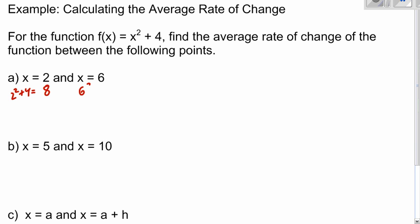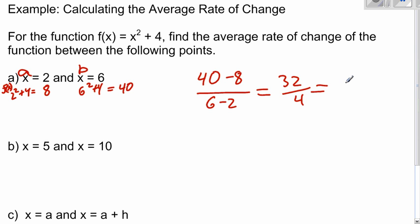Plug in 6, 6 squared plus 4, that's 36 plus 4, which is 40. So we have our two points. These are our f of x values. These are just the x values. You can call this a and b to go along with the formula we had on the previous slide. So f of b is 40, minus f of a is 8, over b minus a, 6 minus 2. That's 32 over 4, which is 8.